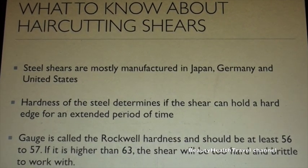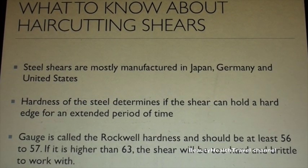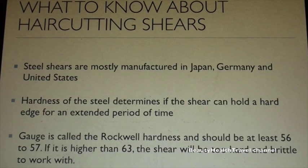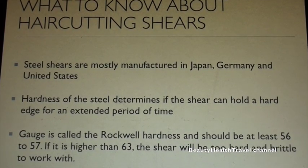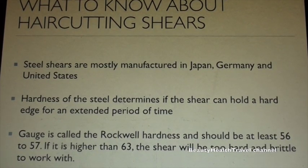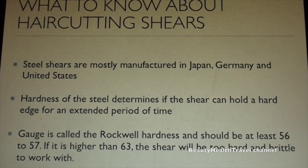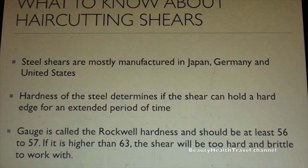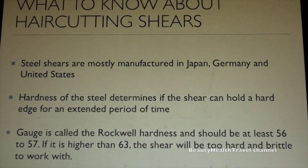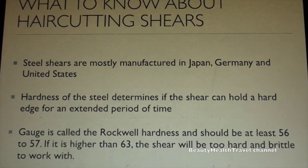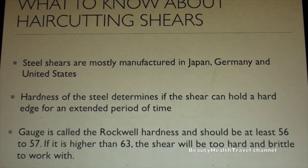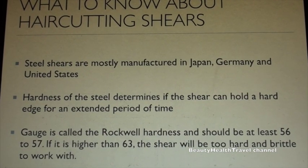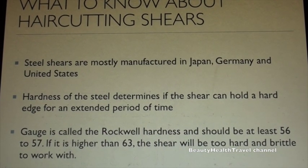What to know about haircutting shears: Steel shears are mostly manufactured in Japan, Germany, and the United States. The hardness of the steel determines if the shear can hold a hard edge for an extended period of time. This is called the Rockwell hardness and should be at least 56 to 57. If it is higher than 63, the shear will be too hard and brittle to work with.